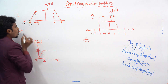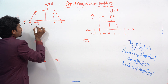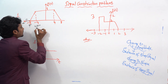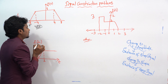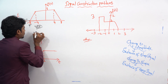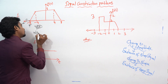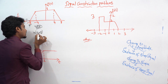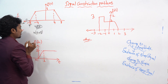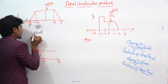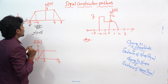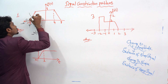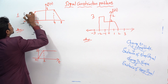That means you already know how to write this — it will be t minus (−8), which equals t = −8. So the ramp signal can be represented as r(t + 8). Our target now is to find the magnitude, and next we need to find the slope.